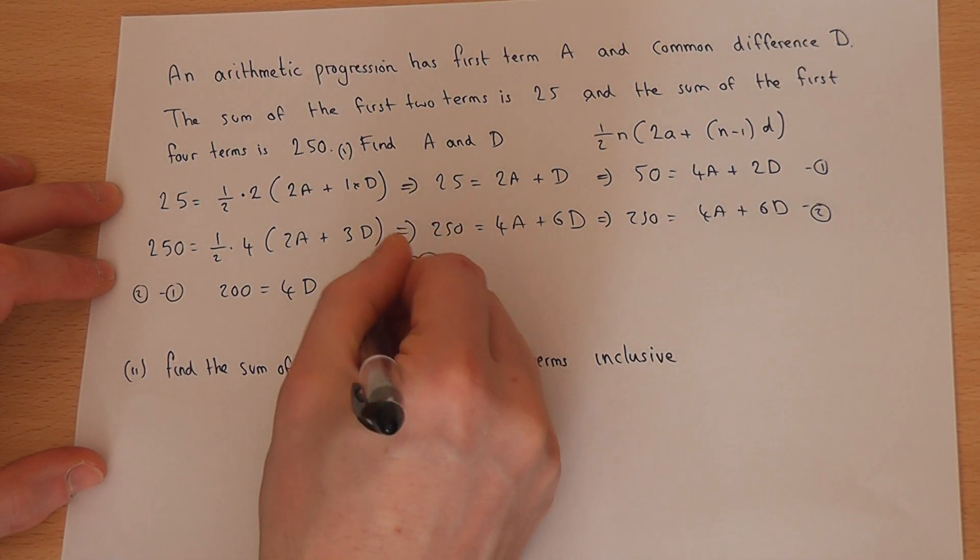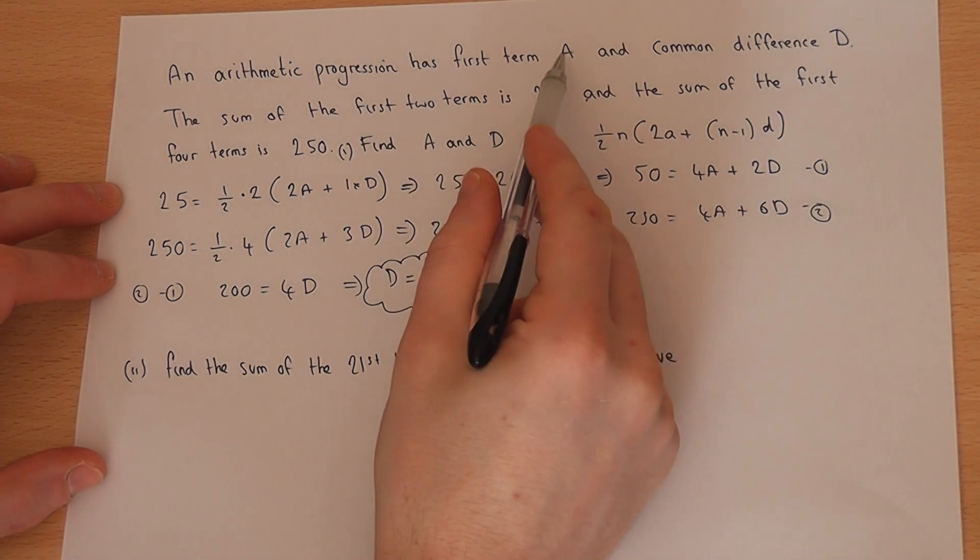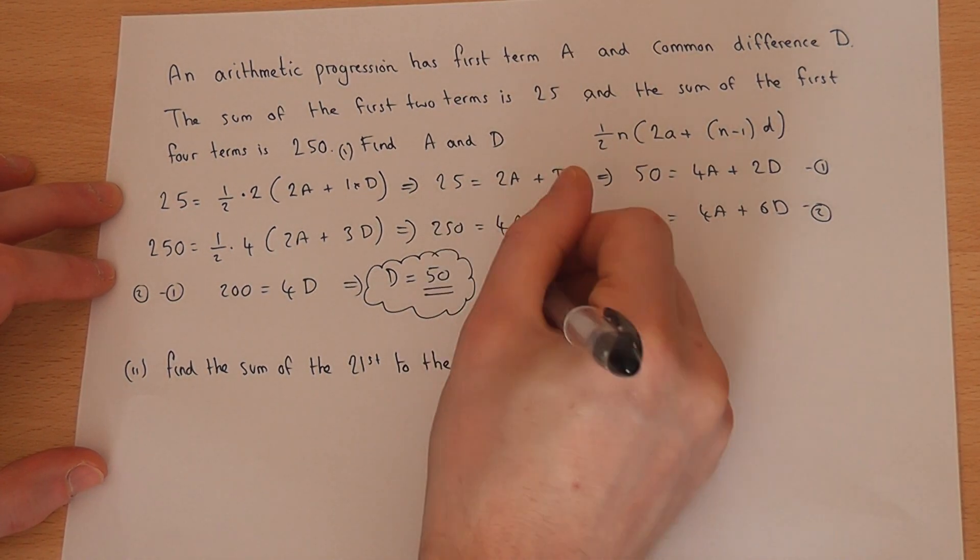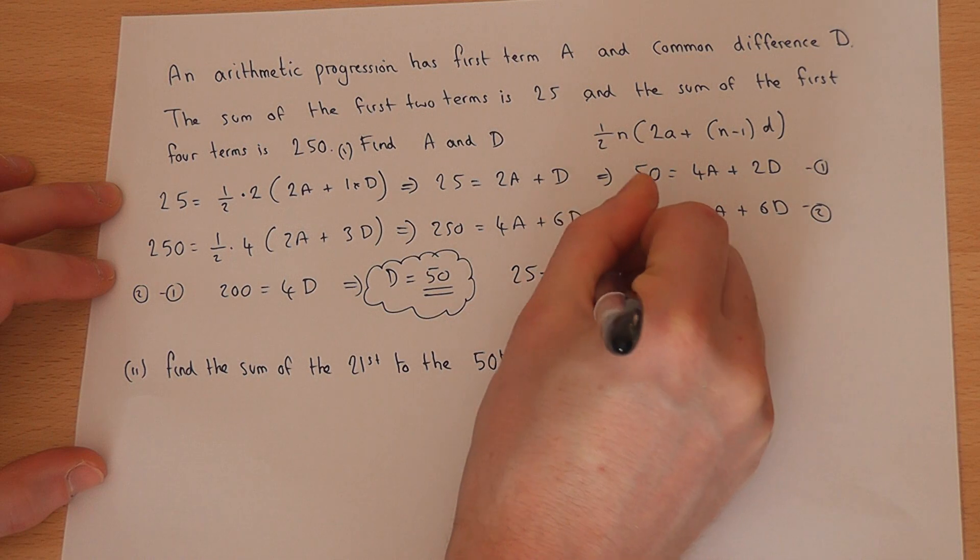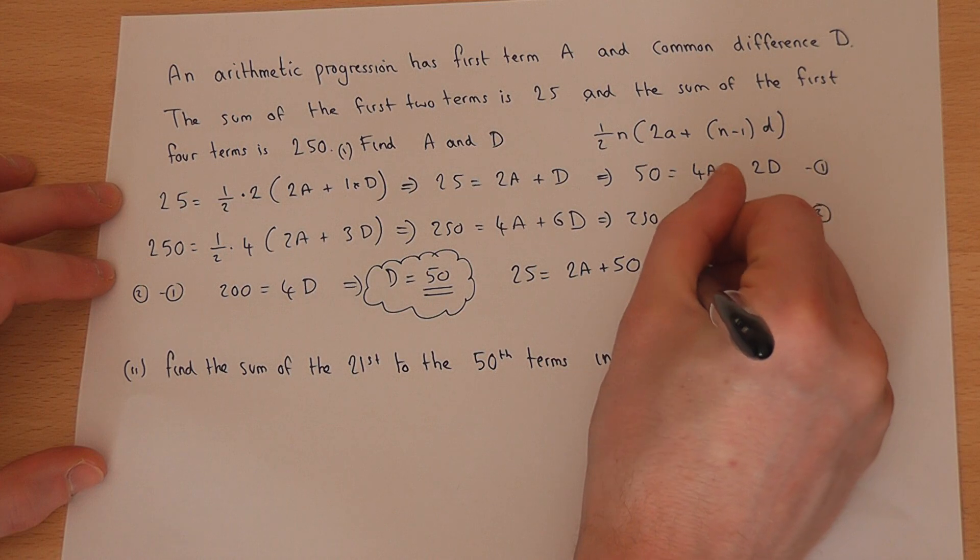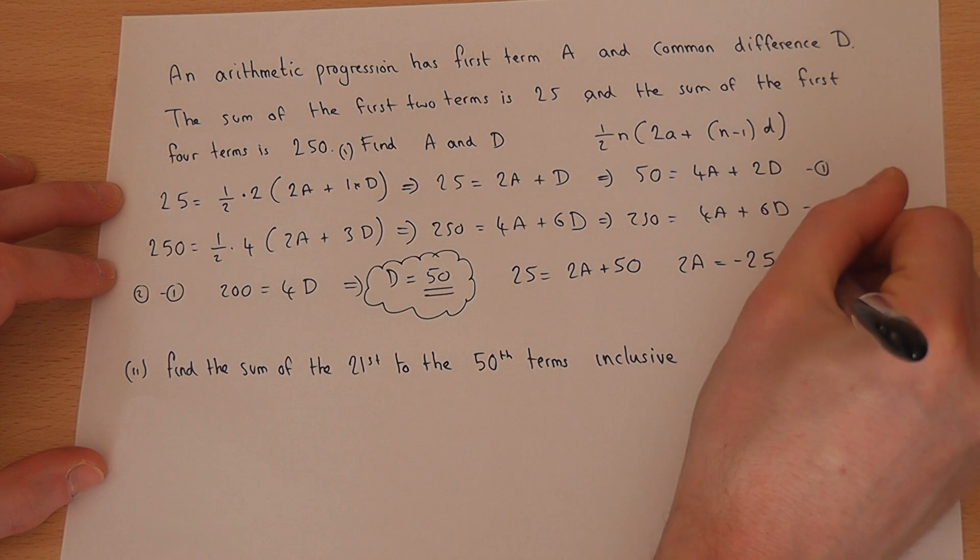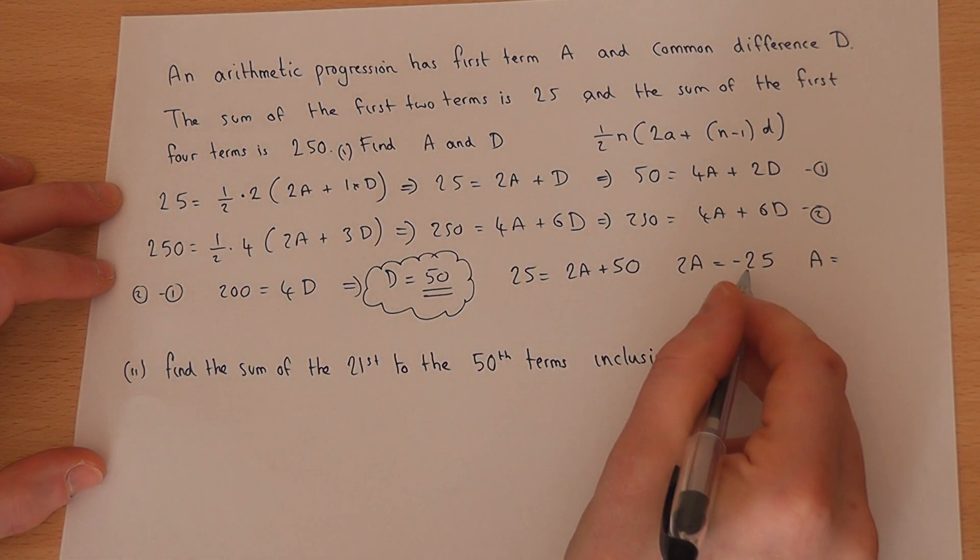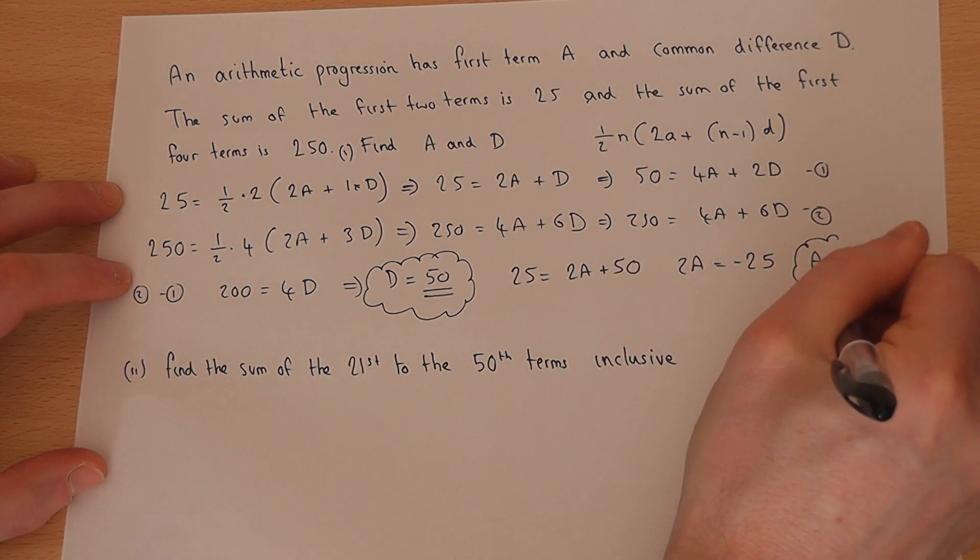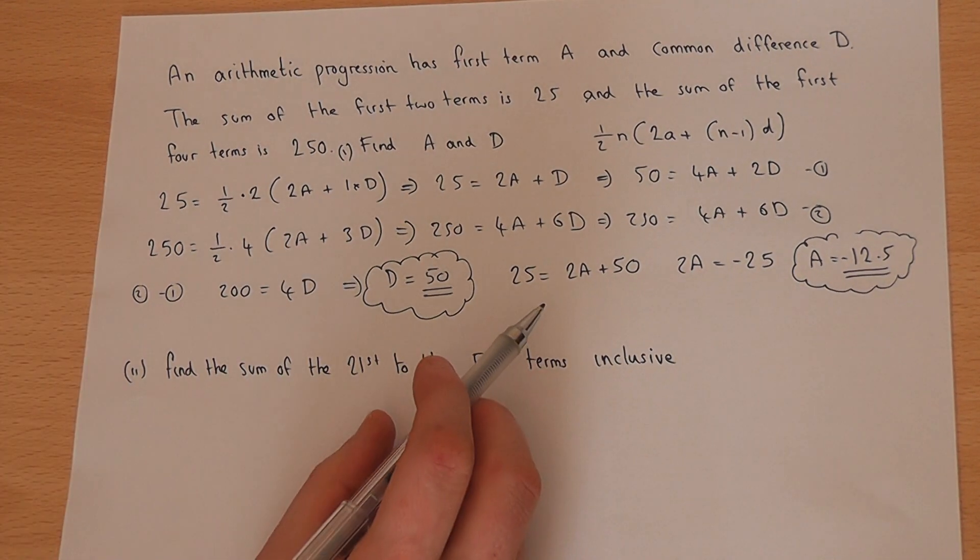So I've found the difference to be 50. However, I also want to find the first term. So if I resort to the first equation here, then 25 equals 2a plus 50. I've subbed the 50 into the equation. So 2a is 25 take 50, which is minus 25. So a is a half of minus 25, which is minus 12.5. So I've found the first term to be minus 12.5, and the common difference to be 50.